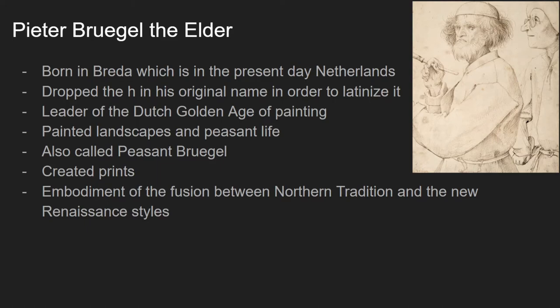He was the leader of the Dutch Golden Age of painting, and he painted landscapes and peasant life. He would paint landscapes of what was going on in the Dutch countryside, but focused on peasants as they worked in their fields. That made him so different from all the other artists who painted very regal scenes of royalty, or in most cases with the Renaissance, very religious subjects. So he kind of diverged from that. He was also called Peasant Bruegel because, of course, he painted peasants.